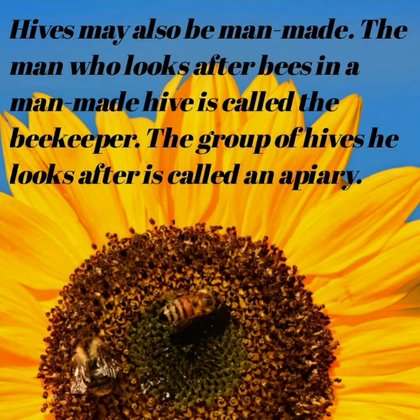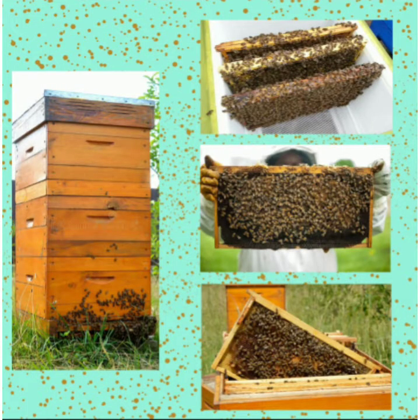Hives may also be man-made. The man who looks after bees in a man-made hive is called the beekeeper. The group of hives he looks after is called an apiary. Two types of hives are made — one that bees make by themselves, and one that is man-made. Can you see in the picture? Yes, this is a man-made hive. The man who looks after bees in a man-made hive is called a beekeeper, and the group of hives he looks after is called an apiary.